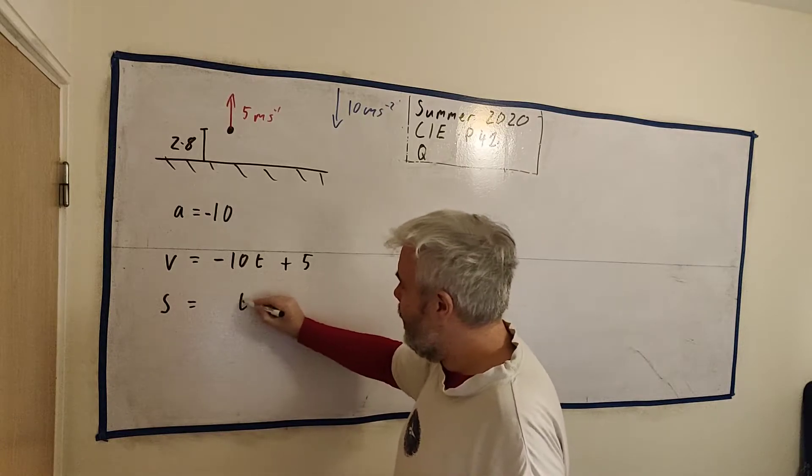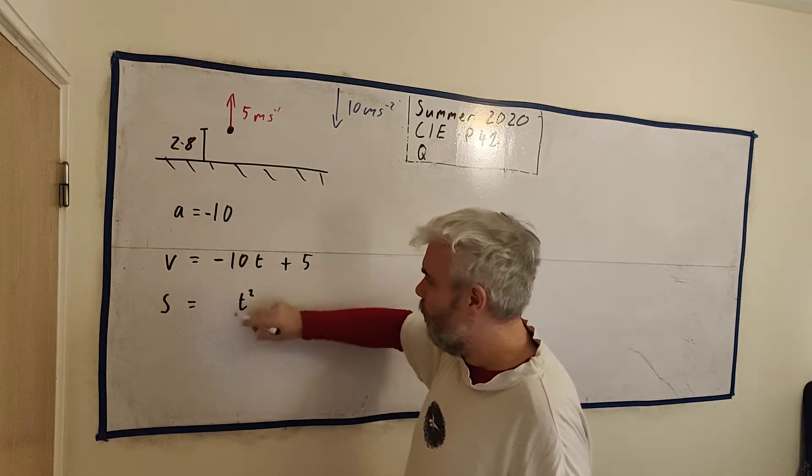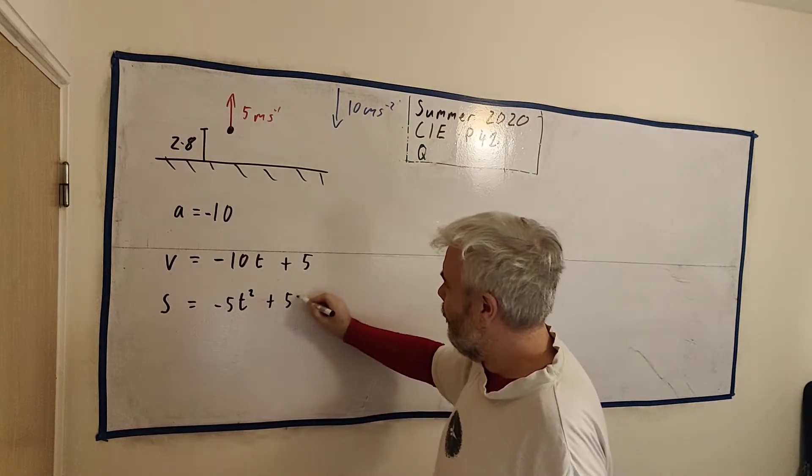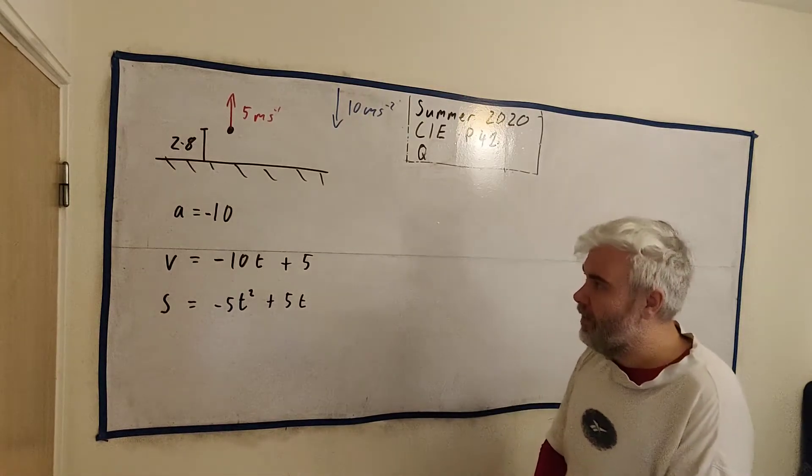We integrate and we get T squared. It goes up 1, we divide by 2, so we get minus 5. Plus we integrate this, we get 5T.